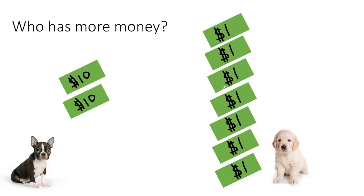Now our opinion changes about who has more money. Because Bruno actually has $10, $20, and Fluffy McFlufferson has one, two, three, four, five, six, seven dollars.